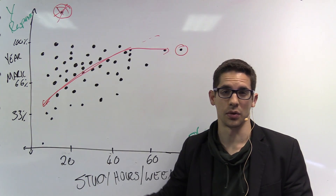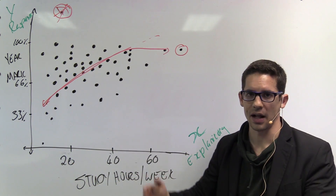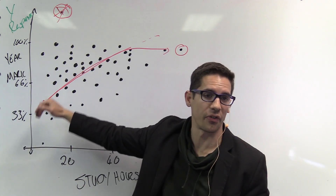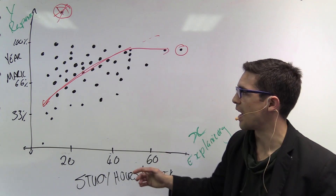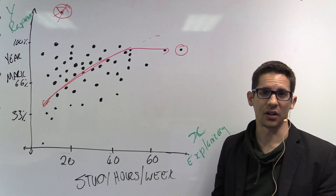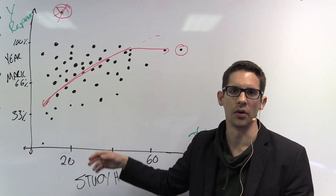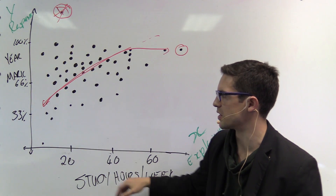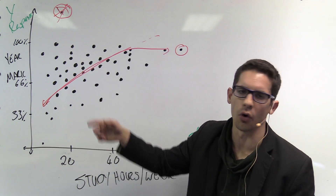If we wanted to convert this into an experiment, we would actually have to group students into different groups and tell one group they're only allowed to study 20 hours per week and see their final year mark, and tell the other group they have to study 60 hours per week and compare. Would we ever conduct an experiment like this? Probably no, because you're interfering with students' marks. So we would just observe afterwards, because we don't want to mess around with how students perform at university.